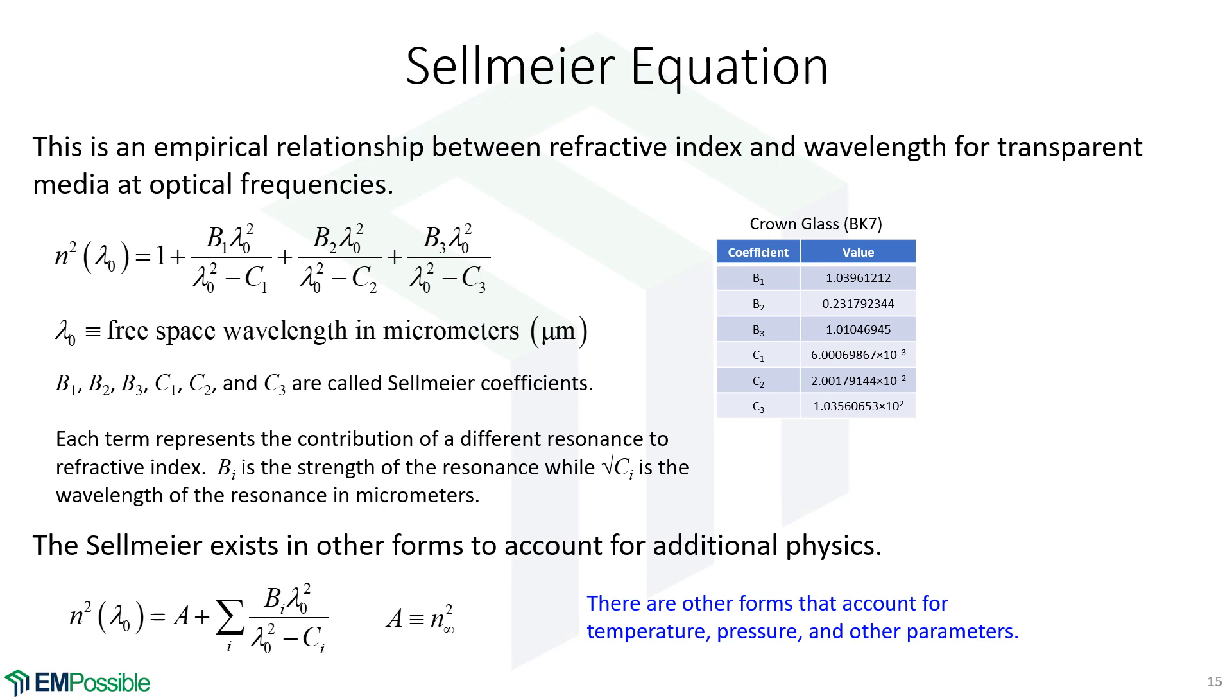The Sellmeier equation is more physically related—we have a sum of terms for calculating refractive index, each representing a different resonance in the glass. But at the end of the day, this is derived empirically. The Sellmeier equation is also used to specify glasses, a bit more physically accurate than the Cauchy model. You'll see different versions accounting for different physics, like temperature dependence—how refractive index changes with temperature is really common.